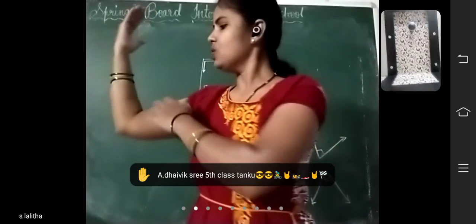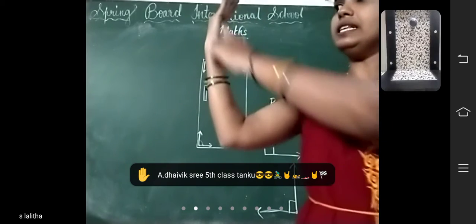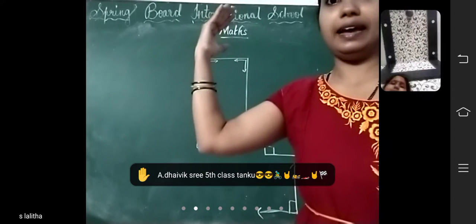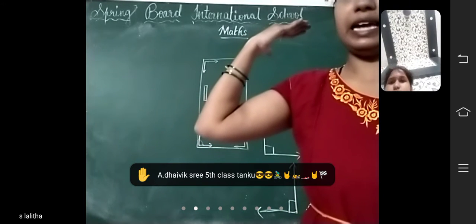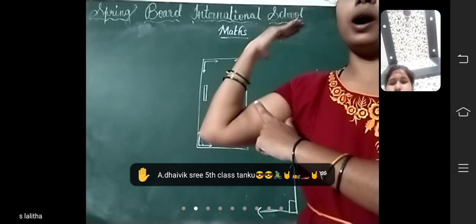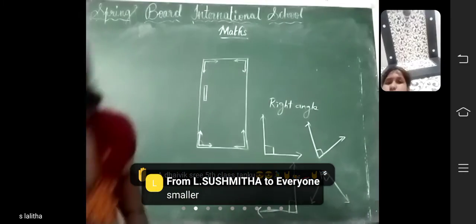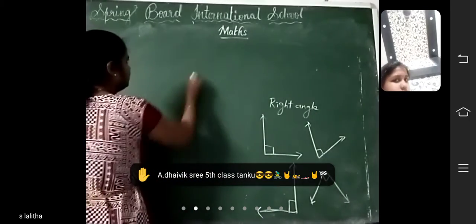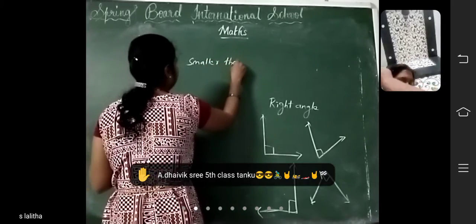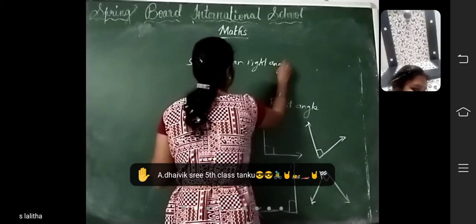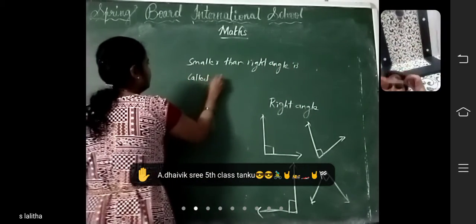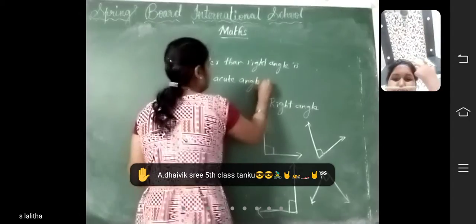What is this angle called? It is horizontal and vertical — which angle is it called here? Right angle. Now I am moving this hand closer. So it is smaller than a right angle. What do you call this angle? Angles smaller than a right angle are called acute angles. If the angle is smaller than a right angle, it is called an acute angle.